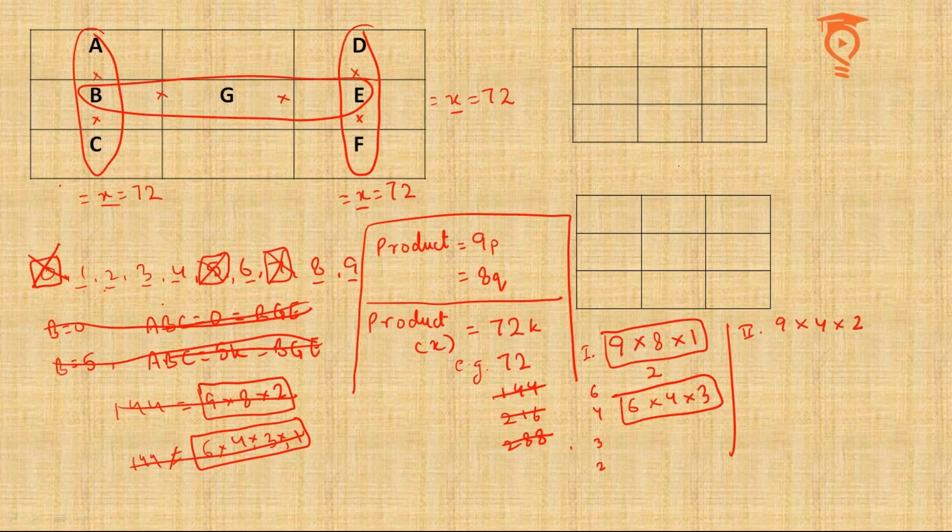And 2 is left. So I think I am getting an idea now. 2 must be the value of G. So if 2 is there, I need to make 36 more because 2 times 36 is 72.